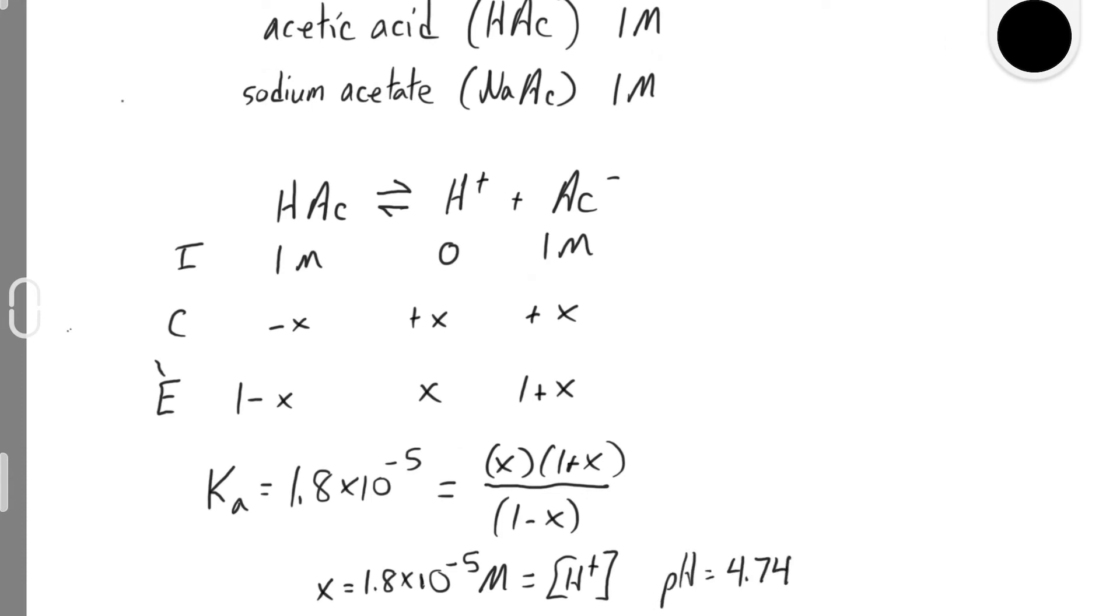It's also possible to do this type of calculation in a more simple fashion, and it relies on the same assumption that we often use when doing an ICE table. If we have a Ka value that is much smaller than our initial concentrations, we can say that the initial concentrations won't change very much by the time they reach equilibrium.